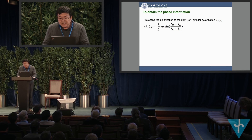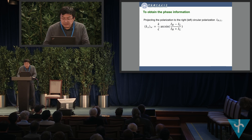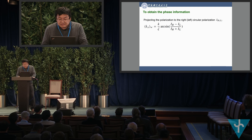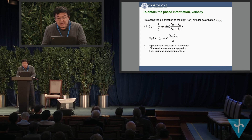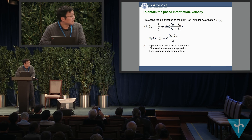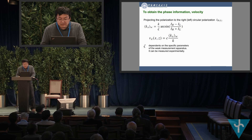In order to obtain the relative phase information, we project the polarization of the photon to the right and left circular polarization states, and measure the intensities I_R and I_L. We can get the relative phase by calculating an arcsine function, and then obtain the relative transverse momentum Kx and also the Bohmian velocity for photons. Kx depends on the specific parameters of the weak measurement apparatus and can be measured in our experiment.